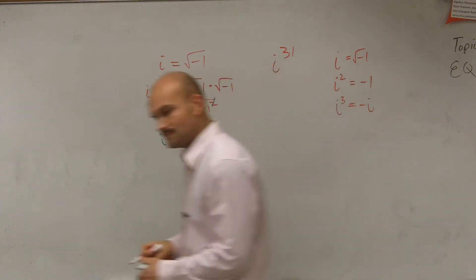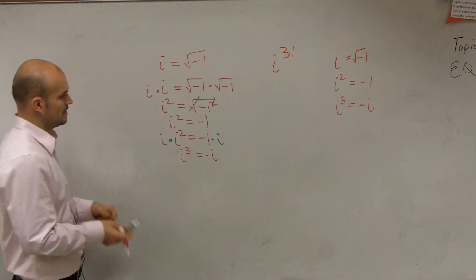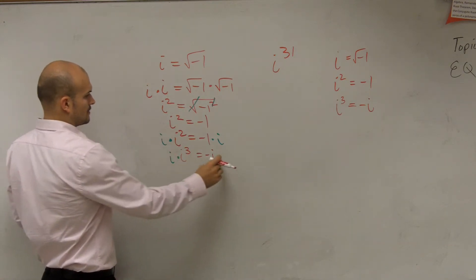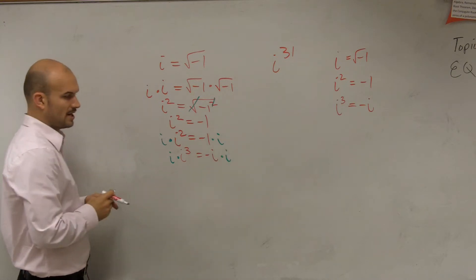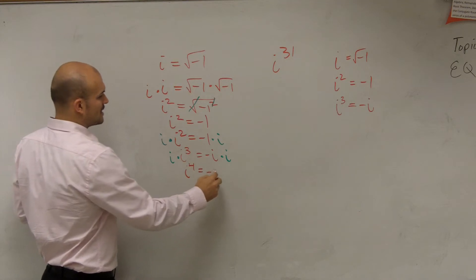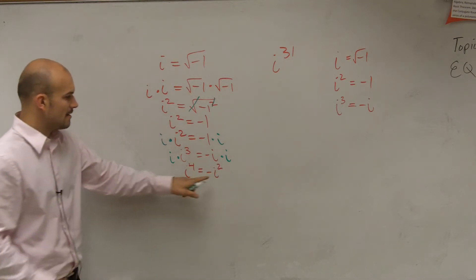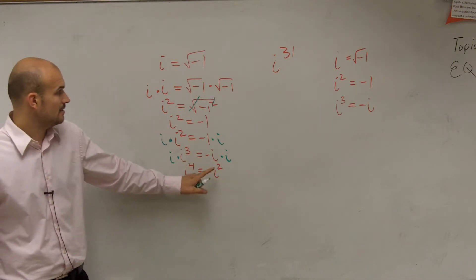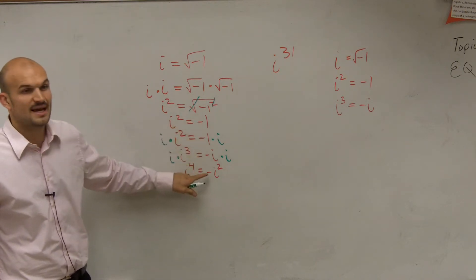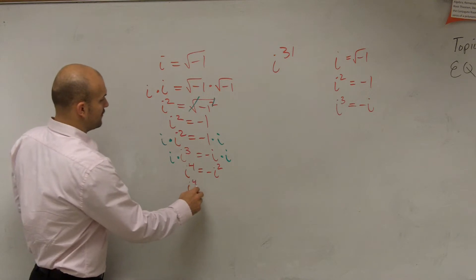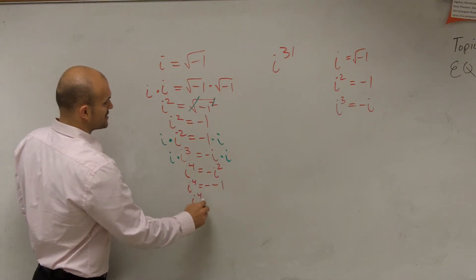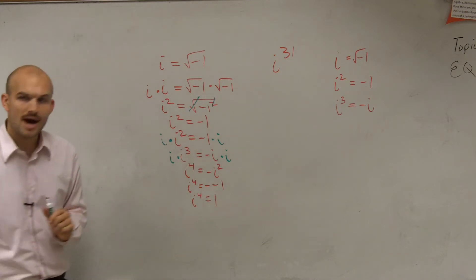Then let's multiply it again. So let's multiply by i again. And then what I get is i times i cubed is i to the fourth, which equals a negative i squared. Now, we remember what i squared was, right? i squared equals negative 1. But now, this is a negative i squared. So it's going to be i to the fourth equals a negative negative 1, which i to the fourth now equals positive 1.